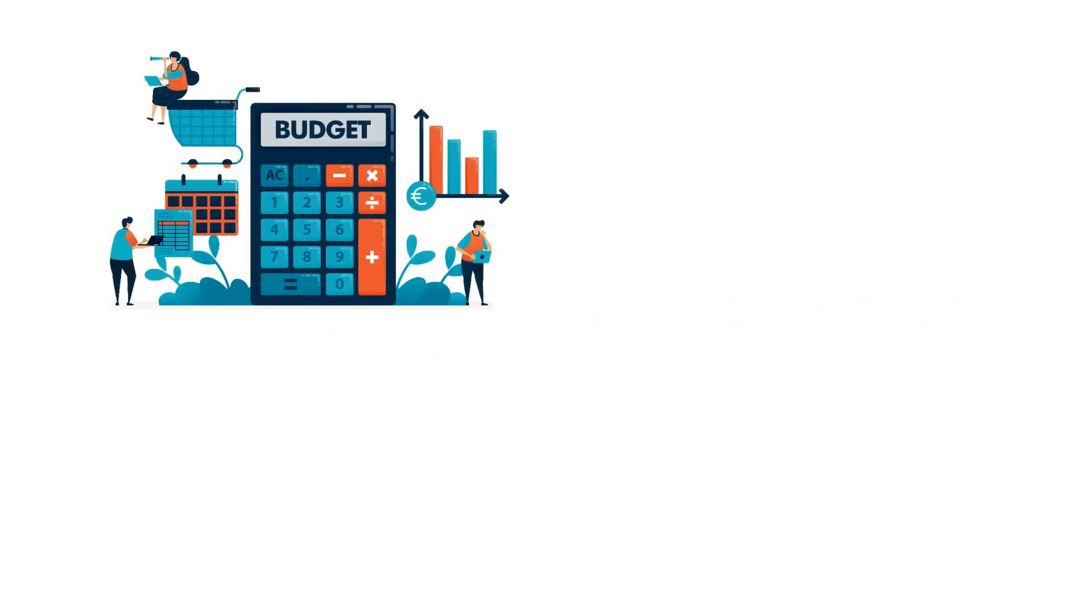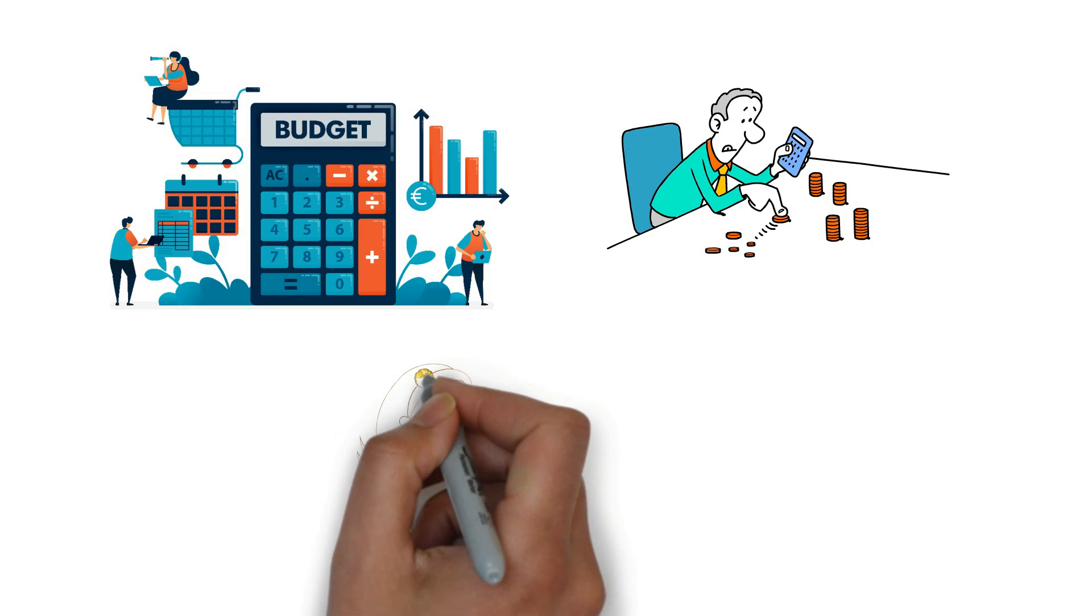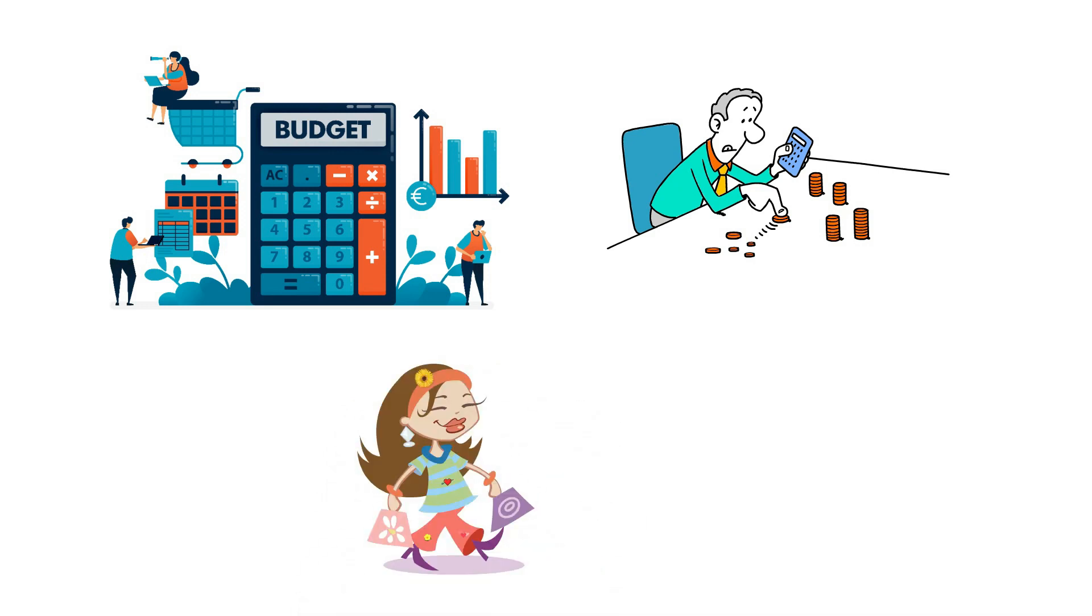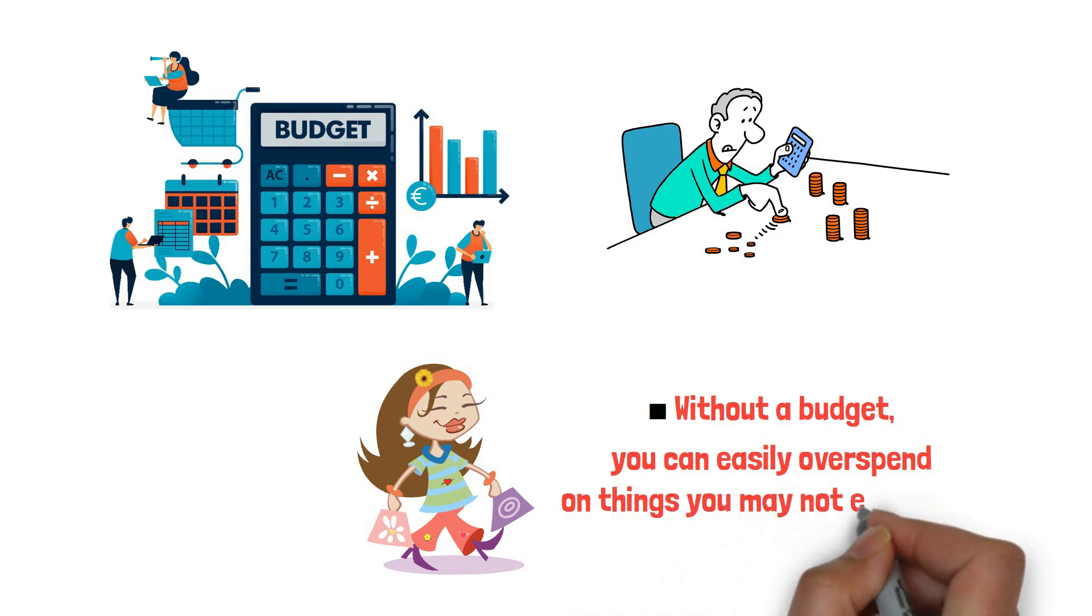Number 6: Not Having a Budget. If you don't have a budget, it's easy for money to slip away unnoticed. This is especially true when you're not careful with your spending. Without a budget, you can easily overspend on things you may not even need.